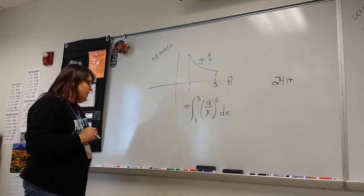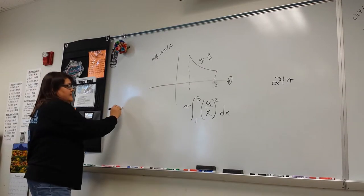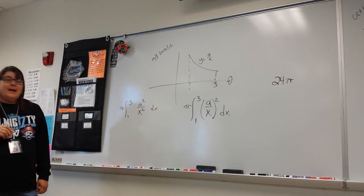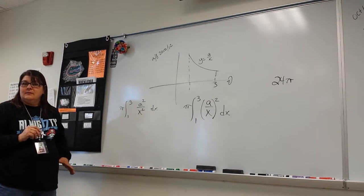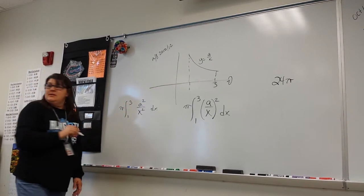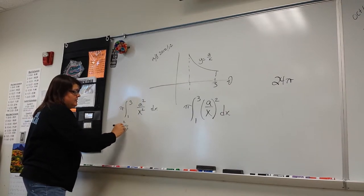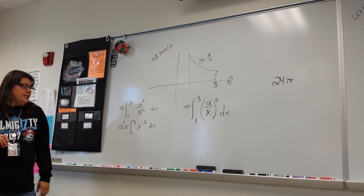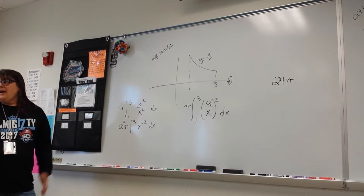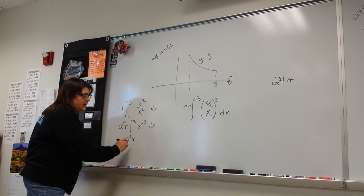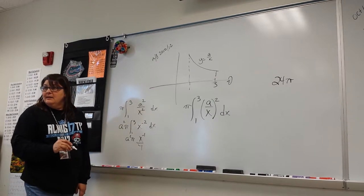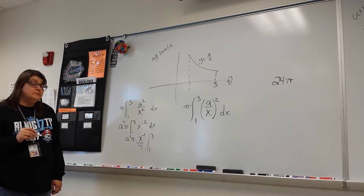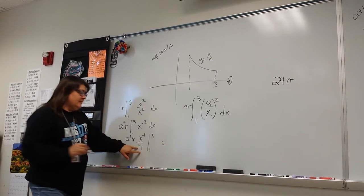Do our algebra first: pi from one to three of A squared over x squared. Rewrite as A squared times x to the negative two, and pull the A squared out front. The integral of x to the negative two is x to the negative one over negative one, from one to three. Bring the negative to the front: negative A squared pi times 1 over x, from one to three. Plugging in: one-third minus one, which is one-third minus three-thirds, giving negative two-thirds.